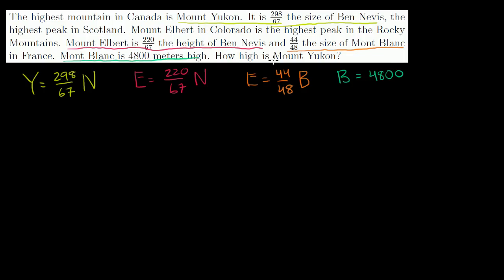They ask us how high is Mount Yukon, so we have to figure out Y. Let's work backwards. Starting with B equal to 4,800: E is equal to 44 over 48 times B, which is 4,800 meters. Dividing 4,800 by 48 gives 100, so Elbert is 44 times 100 meters, which equals 4,400 meters.